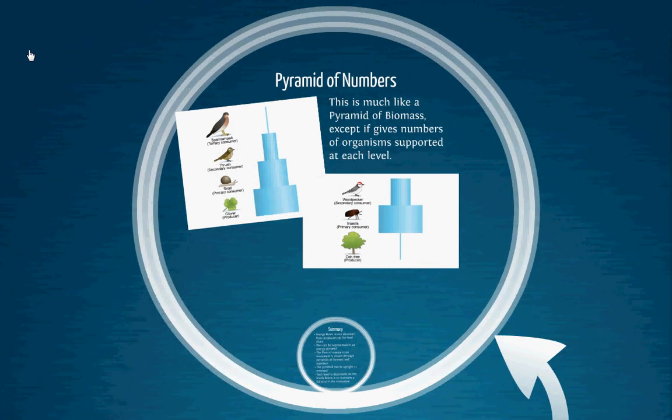Along with pyramids of biomass, there is a pyramid of numbers. It works a lot like a pyramid of biomass, but instead of giving you the amount of matter in a certain area of the ecosystem, they give you numbers of organisms. They can be regular pyramids — like the one with clover, snail, thrush, and sparrowhawk, where there's less and less numbers supported at each level — or they can be very odd-shaped, like the one with the oak trees and insects, where there are far more insects living in the trees. So it is an odd shape; it's still called a pyramid of numbers, but the pyramid shape is kind of just a word in this case.